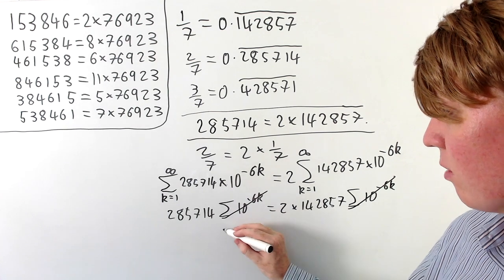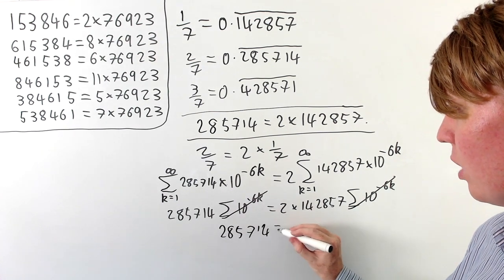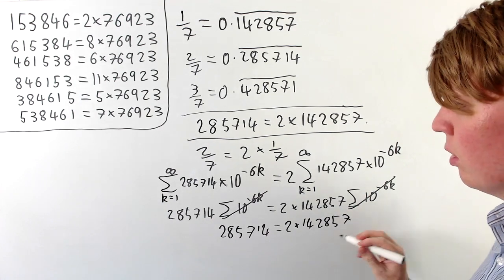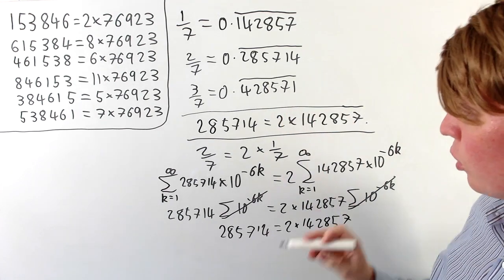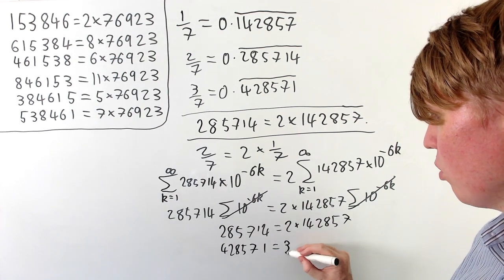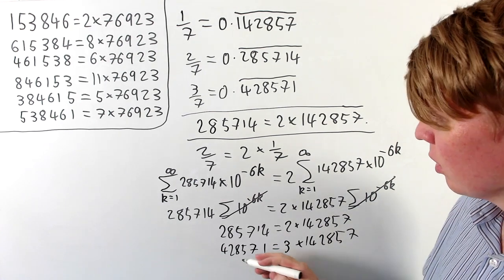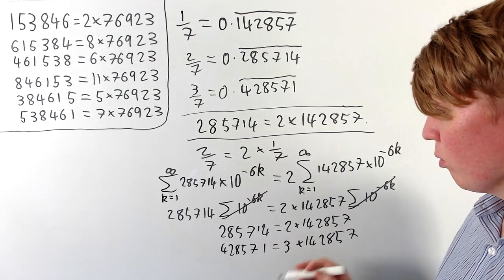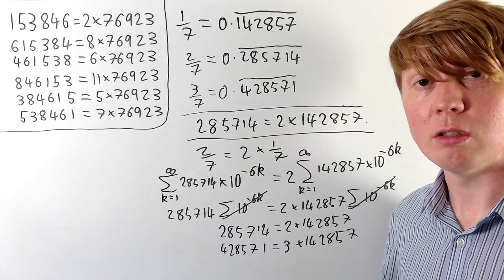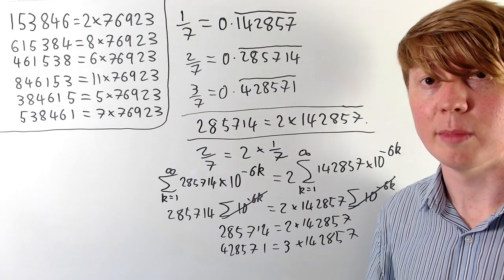The sums cancel out, so we see that indeed 285714 is 2 times 142857. And of course this holds as well for our other fractions: 428571 is 3 times 142857, and 571428 will be 4 times 142857, and similarly for 5/7 and 6/7. We can do the same for each of our fractions, all of our different numbers with 7 in the denominator.